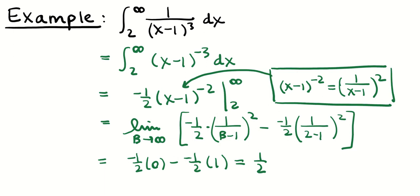This integral converged to 1/2. I found an antiderivative, transformed it into a limit, and as b approached infinity, the fraction 1 over (b minus 1) squared went towards 0 because I was dividing by a larger and larger number. The key aspect was taking x minus 1 to the negative 2 power and putting it back as a fraction. Looking at b minus 1 to the negative 2, the limit as b goes to infinity, it's easier to see it equals 0 when written as 1 over (b minus 1) squared — denominator grows, numerator stays constant, so it goes to 0.